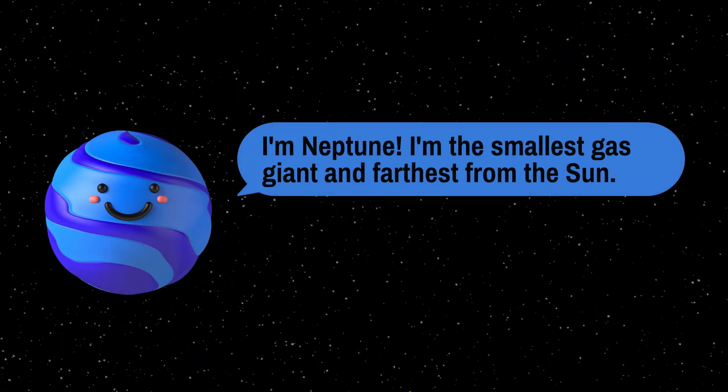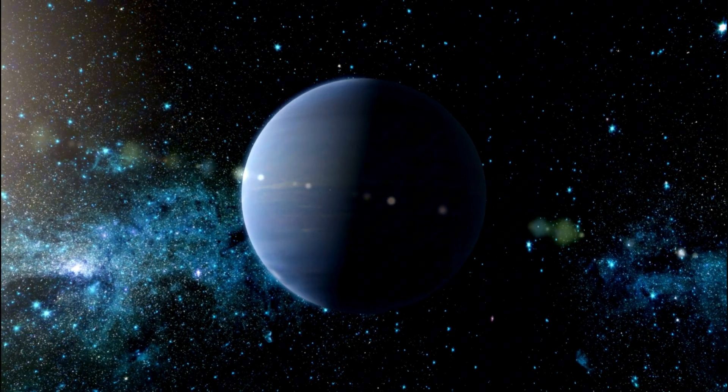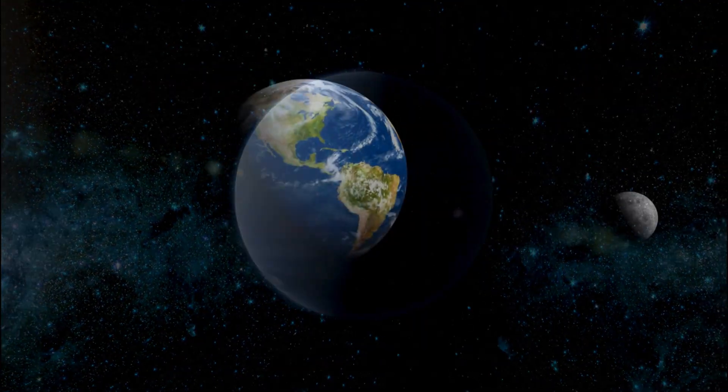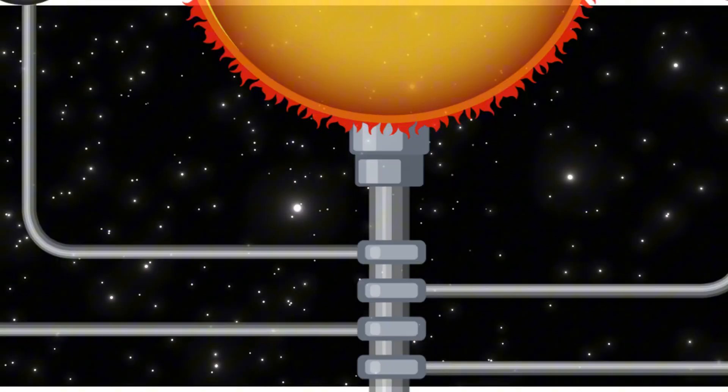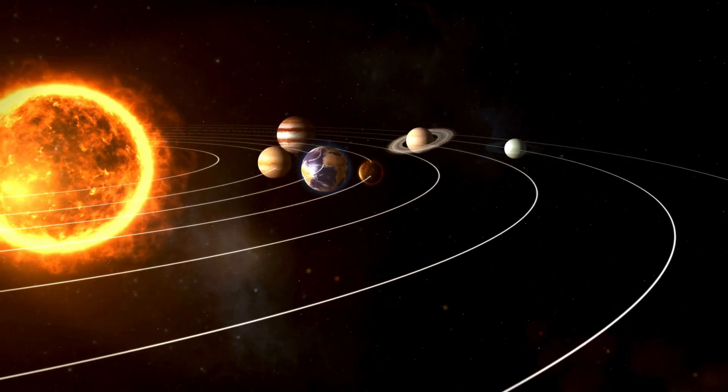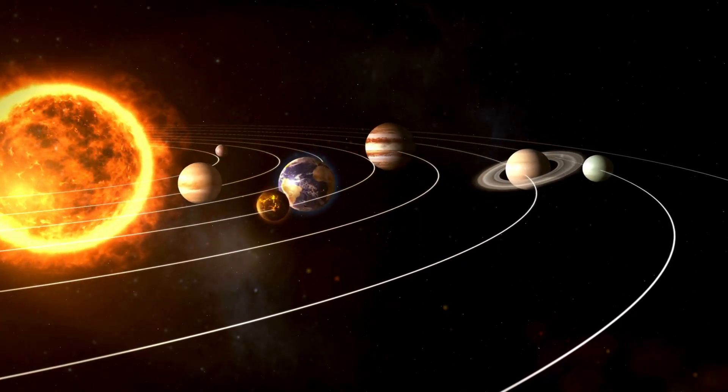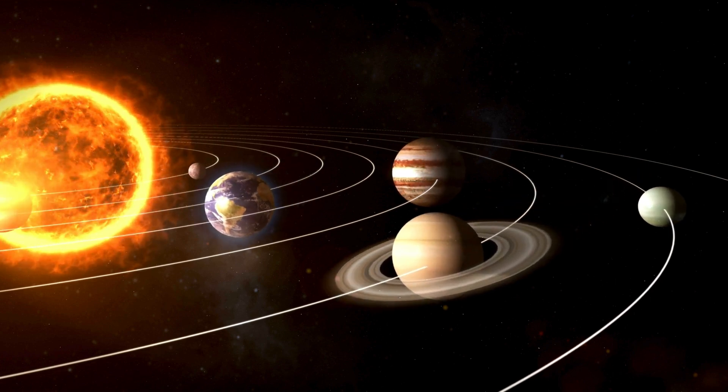Neptune's winds are really fast, through the dark it zooms on past. Eight big planets, moons and more, our solar system we explore.